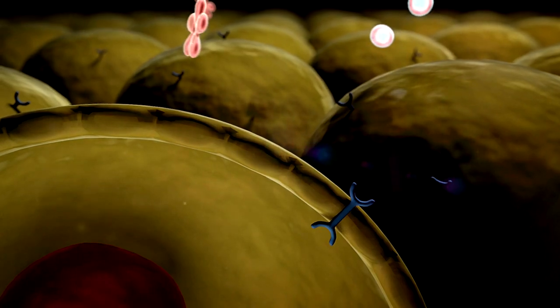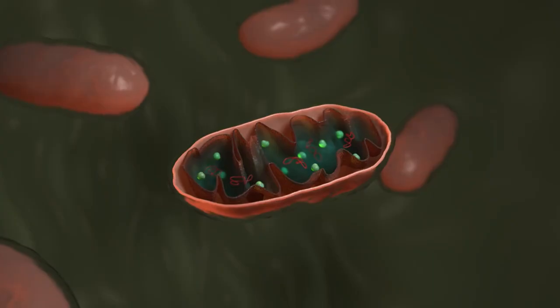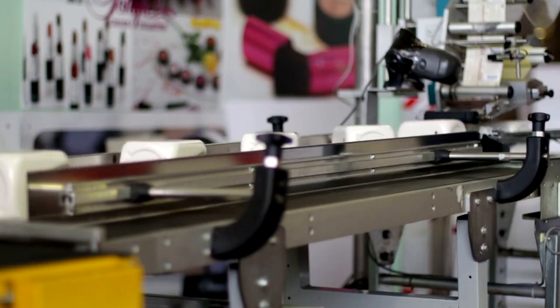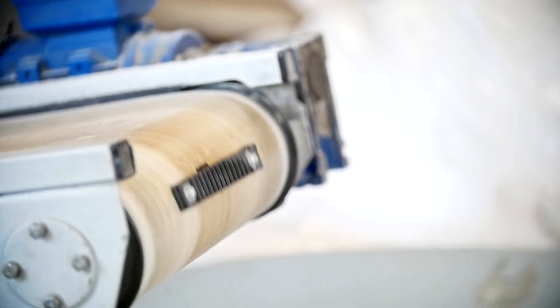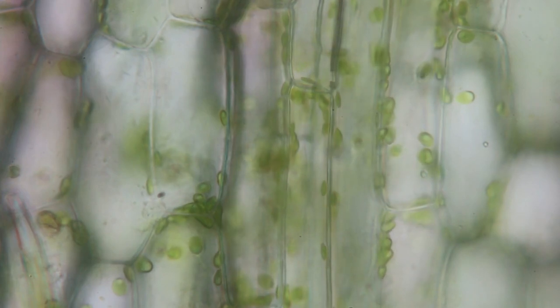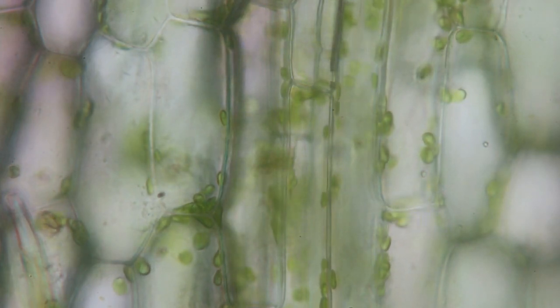But they don't just wave a magic wand and turn it into energy. Oh no, it's way cooler than that. Let's break down the three-step process that makes all this magic happen. Step one, glycolysis. Sounds like a fancy term, but it's just the first part of your body's energy journey. This happens outside the mitochondria, in the cell's cytoplasm.